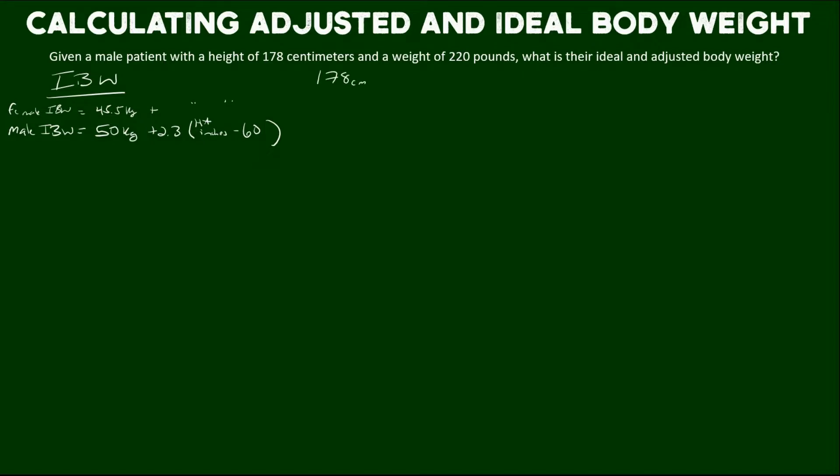For a patient with 178 centimeter height, we would multiply it by the conversion factor to turn centimeters into inches, which looks like this. One inch having 2.54 centimeters in it. And if we did that math, this patient's height is about 70 inches.